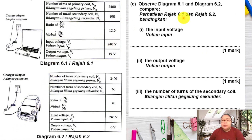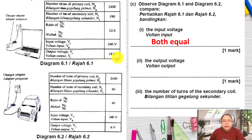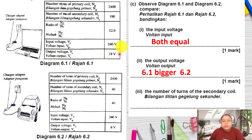Now the comparison question between 6.1 and 6.2. The input voltage should be the same — both are 240V, so we answer they are equal. For output voltage: 6.2 is 6V, 6.1 is 19V, so 6.1 is more than 6.2. For number of secondary coil turns: 6.2 is 60, 6.1 is 190 — so 6.1 is more than 6.2. For the ratio Np over Ns: 6.1 is 12.6, 6.2 is 40 — so 6.2 is bigger than 6.1.